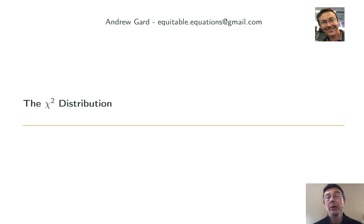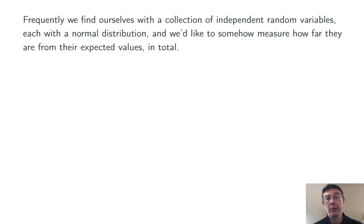Hey everybody. Today we're introducing the chi-squared distribution. Suppose we have a collection of independent random variables, each with a normal distribution. We'd somehow like to measure how far those variables are from their expected values, sort of overall. The variable chi-squared is going to let us do this.